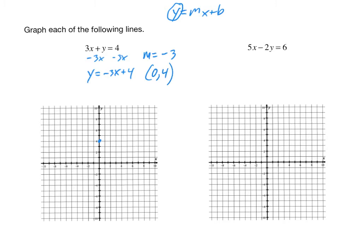Negative 3 is the same thing as negative 3 over 1. So if we go up 3, we'd want to go left 1 in order to have a decreasing line because the slope is negative. Up 3, left 1. Or down 3, right 1 — continuing that pattern. This right here is the graph of 3x plus y equals 4.